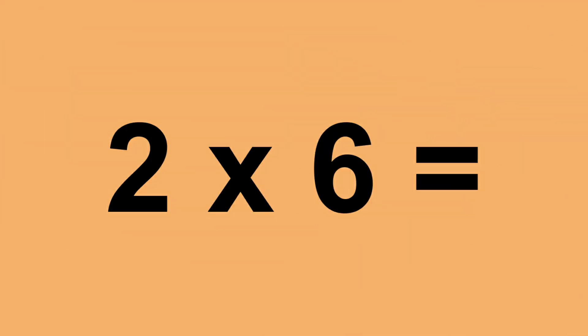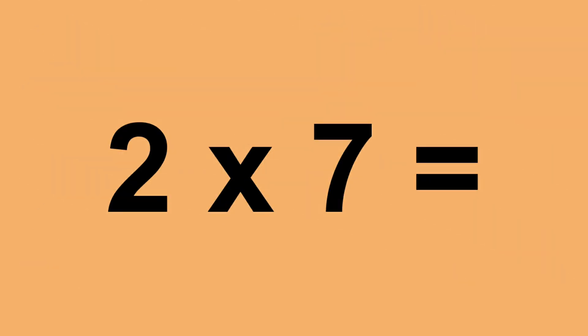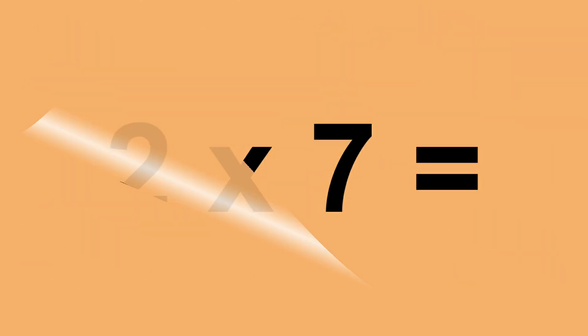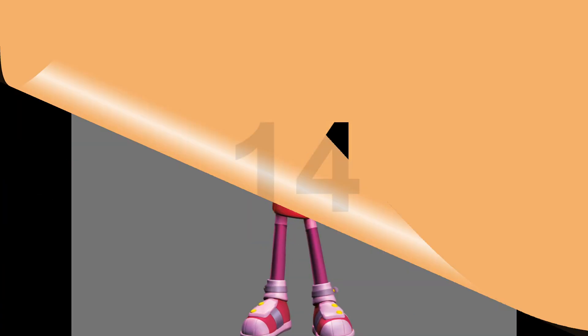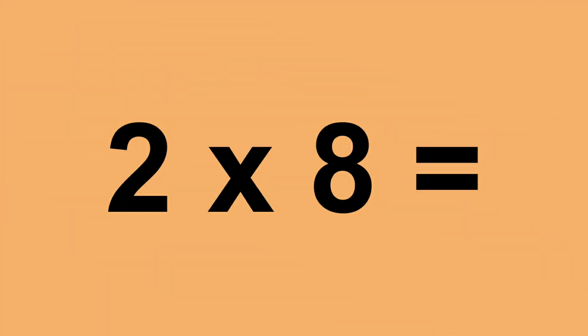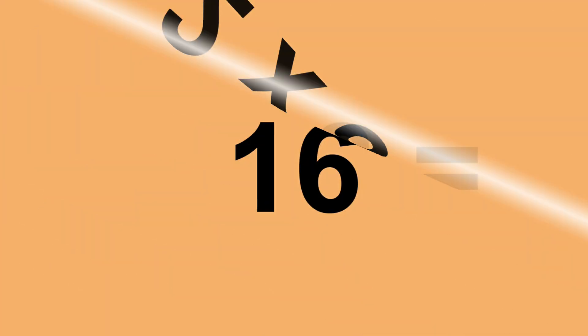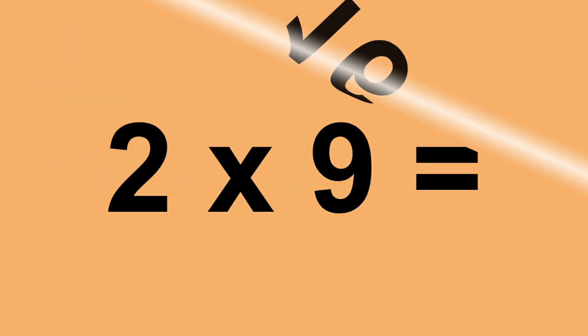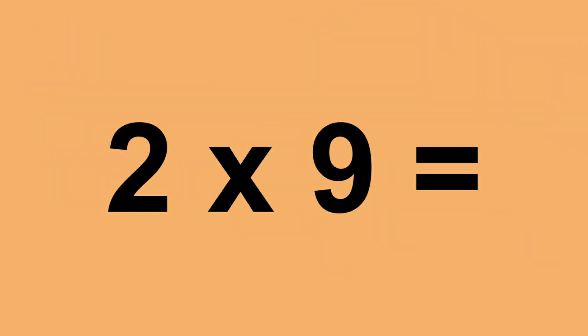Two times six equals twelve. Two times seven equals fourteen. Two times eight equals sixteen. Two times nine equals eighteen.